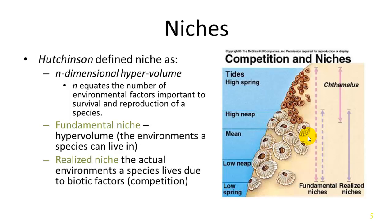What a species actually inhabits is called the realized niche, shaped by interactions with other species such as competition. The classic example involves barnacle species with different realized and fundamental niches. The Chthamalus species can inhabit further down in the intertidal zone based on its homeostatic tolerance. The Balanus species would extend into that upper area as well if Chthamalus weren't present, but Chthamalus outcompetes it at higher tide levels, thus reducing Balanus's realized niche.